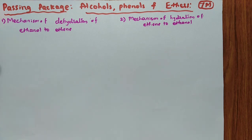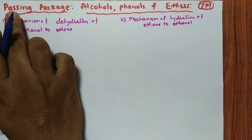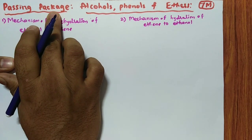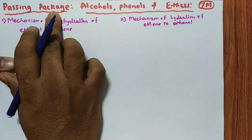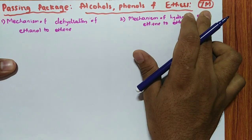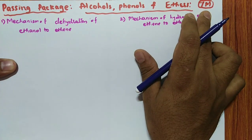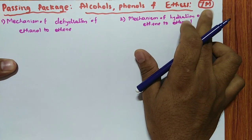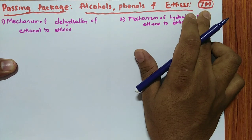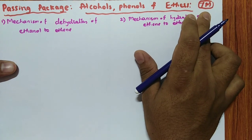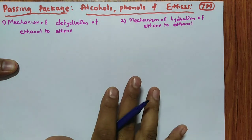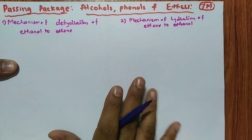Namaste friends. In today's session, a package for the second PUC supplementary exam students: the alcohols, phenols and ethers chapter. I am going to discuss from this chapter 7 marks we come across. So at least if you solve these, minimum 5 marks you are going to obtain.